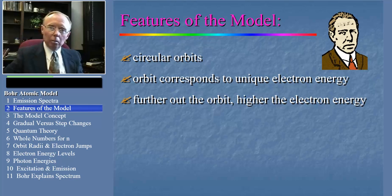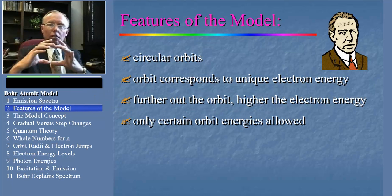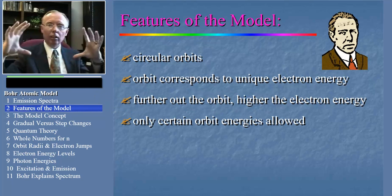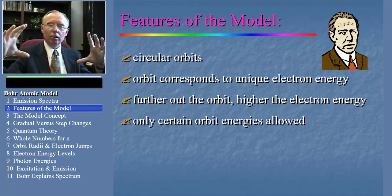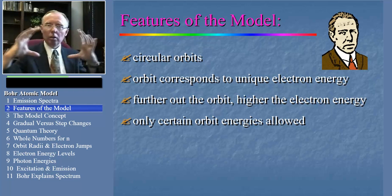Now, what's interesting and unique about Bohr's model is that he said that only certain orbits or energies were allowed. The electron could travel in an orbit, say, this large, and in an orbit, say, this large, but not in an orbit in between.